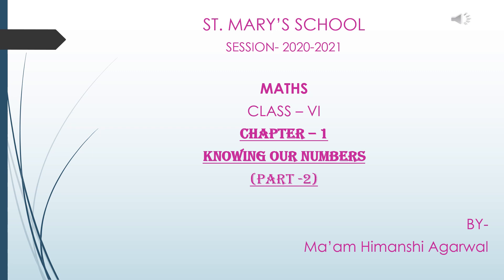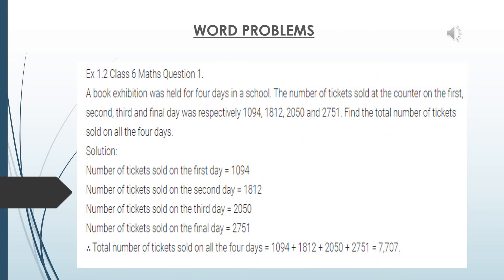Let's continue exercise 1.2, question number one. A book exhibition was held for four days in a school. The number of tickets sold at the counter on the first, second, third, and fourth day respectively was 1094, 1812, 2050, and 2751. Find the total number of tickets sold on all four days.